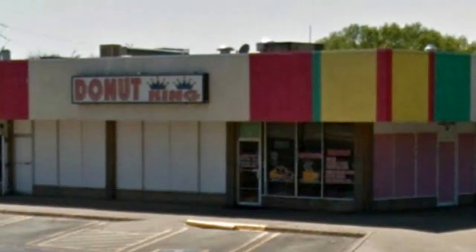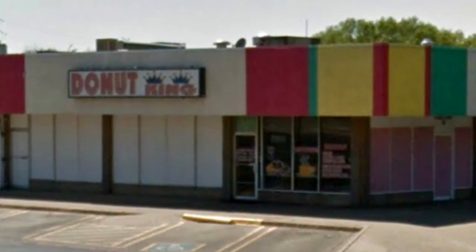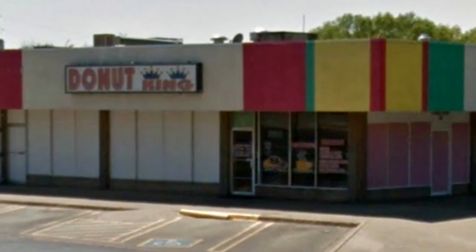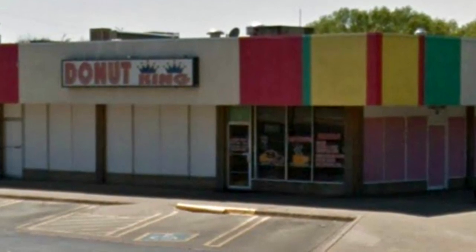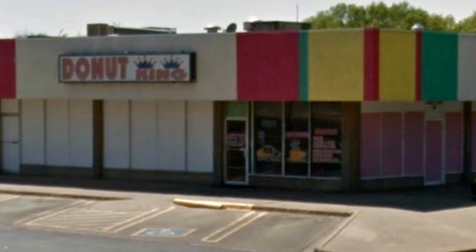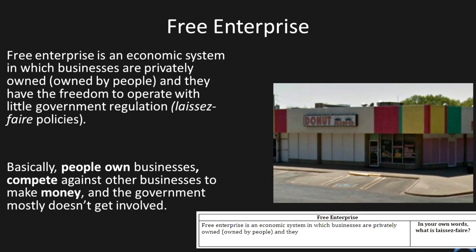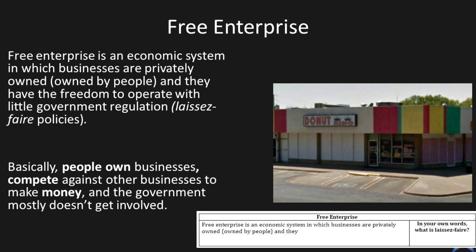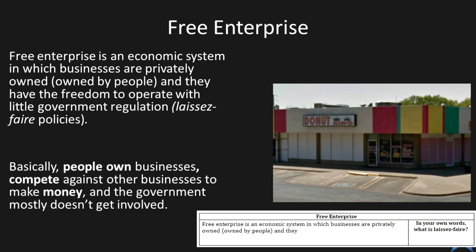For your image analysis, right under where it says Gilded Age: who do you think owns this business, and why is it possible to own businesses like this in the United States? What we have in the United States is known as free enterprise. Free enterprise is an economic system in which businesses are privately owned — owned by people — and they have the freedom to operate with little government regulation.